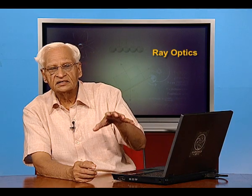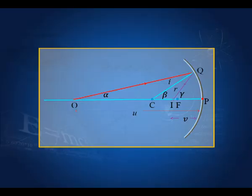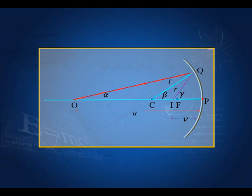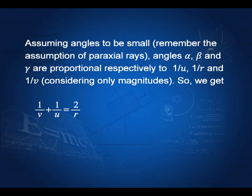Now I make use of the small angle assumption. Alpha is proportional to 1/u where u is the distance of the object from P. Gamma is proportional to 1/v where v is the distance of the image from the pole P. Beta is proportional to 1/R where R is the radius of curvature. Using these proportionalities in the relation gamma plus alpha equals 2 beta, we get: 1/v + 1/u = 2/R.